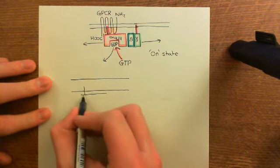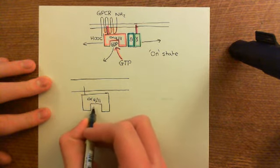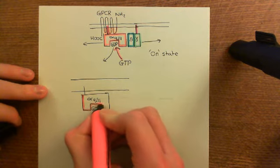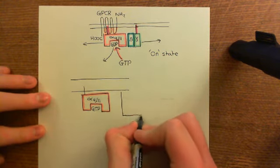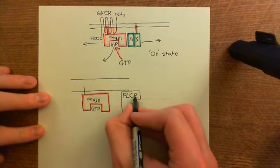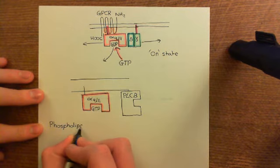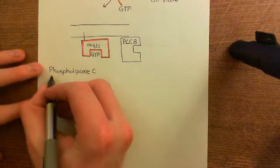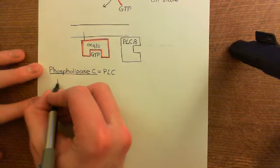So here we now have our alpha-Q/11 subunit of the heterotrimeric G-protein with guanosine triphosphate (GTP) bound to it. This alpha subunit is now going to go off and activate phospholipase C enzymes of the beta type. So let me talk a little about phospholipase C enzymes. There are 13 different genes for phospholipase C enzymes, each with multiple different splice variants. Phospholipase C enzymes are often abbreviated to PLC enzymes.